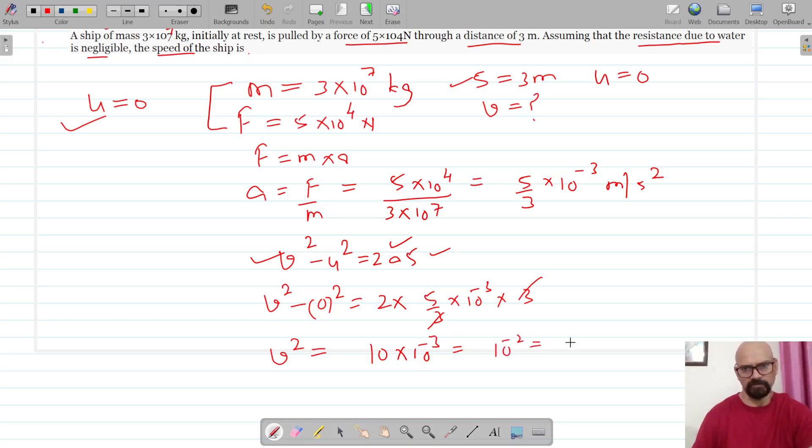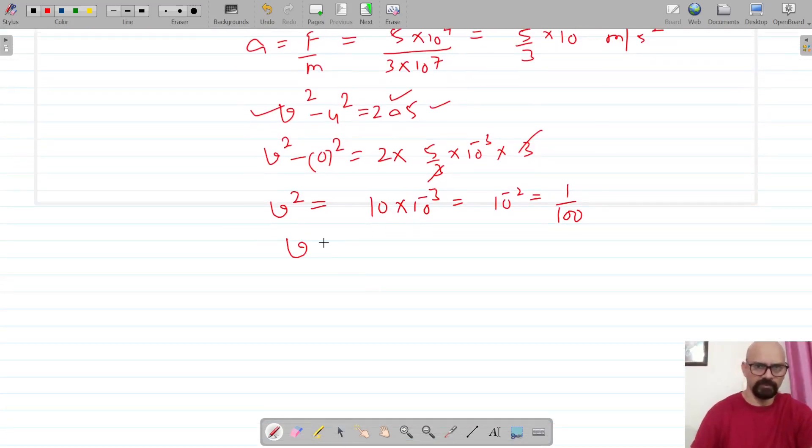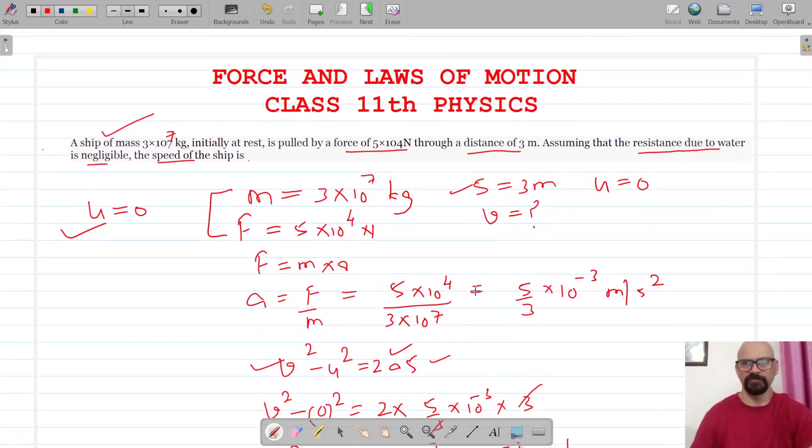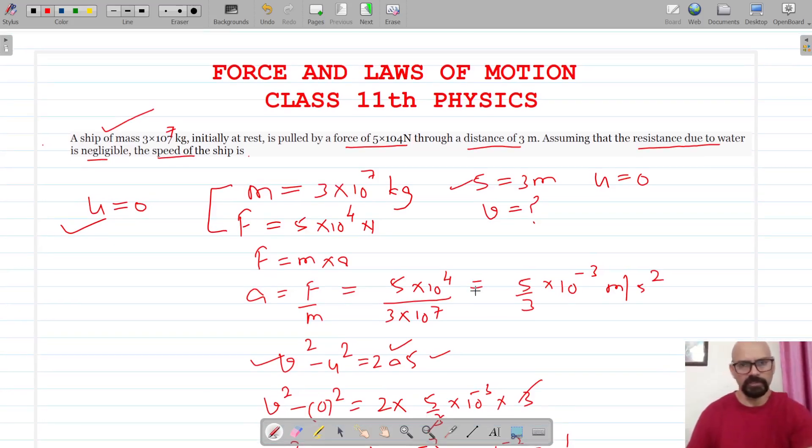Now we calculate v = √(1/100). The square root of 1 is 1, and the square root of 100 is 10, so v = 0.1 m/s. That should be the answer for the final speed of the ship. Let's move on to the next one. Thank you.